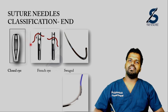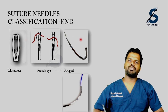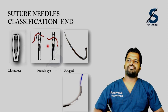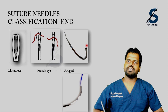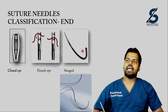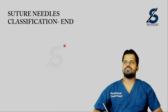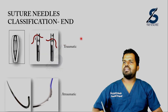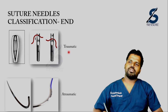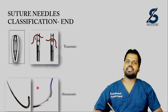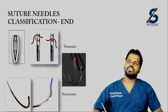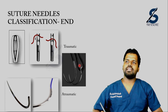Coming to classification based on the end: we have closed eye, French eye, and swaged end. In closed eye and French eye needles, a free thread is passed through the eye and then the suture needle is driven. Whereas in a swaged end, the suture material is inserted directly into the needle and swaged. There are scenarios where two suture materials are inserted into the same needle, for example in a loop PDS. The eye and French eye needles are called traumatic, and the swaged end is called atraumatic, because the atraumatic needle has only one thread passing through the wound while the traumatic needle has two threads, causing additional tissue damage.